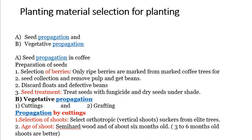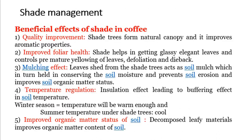The second propagation method is vegetative propagation. Cutting and grafting are followed in coffee cultivation. For propagation by cutting: orthotropic vertical shoot suckers from elite trees are selected. The shoot age should be semi-hardwood, about 6 to 9 months old, which is better for propagation.